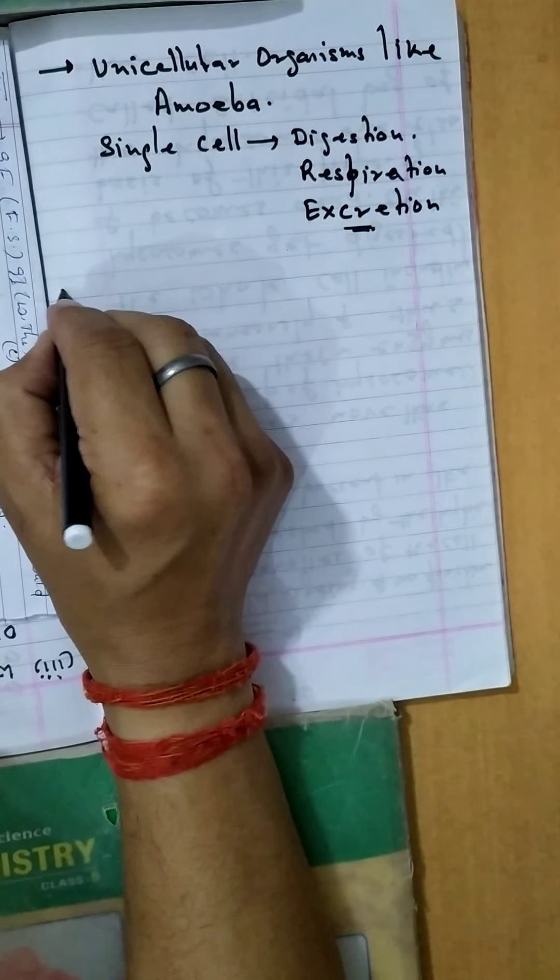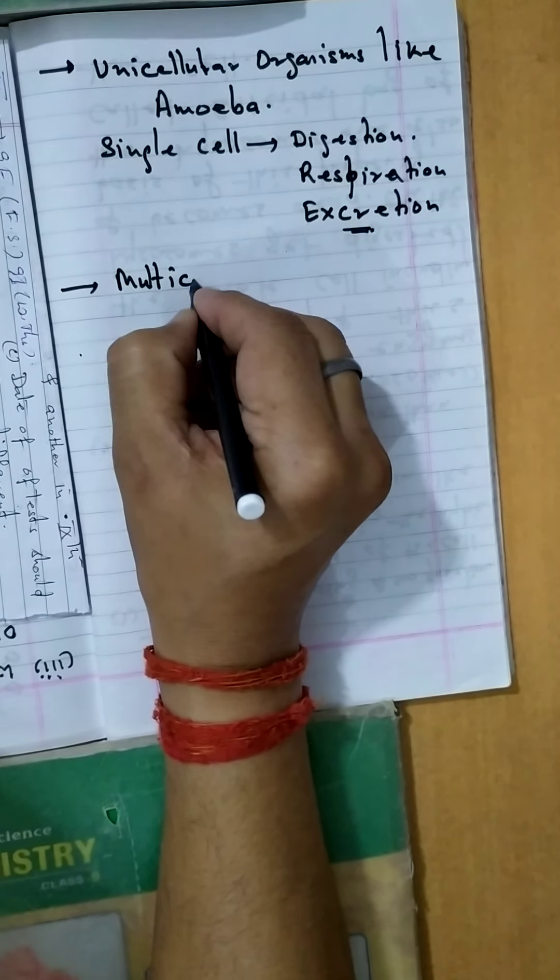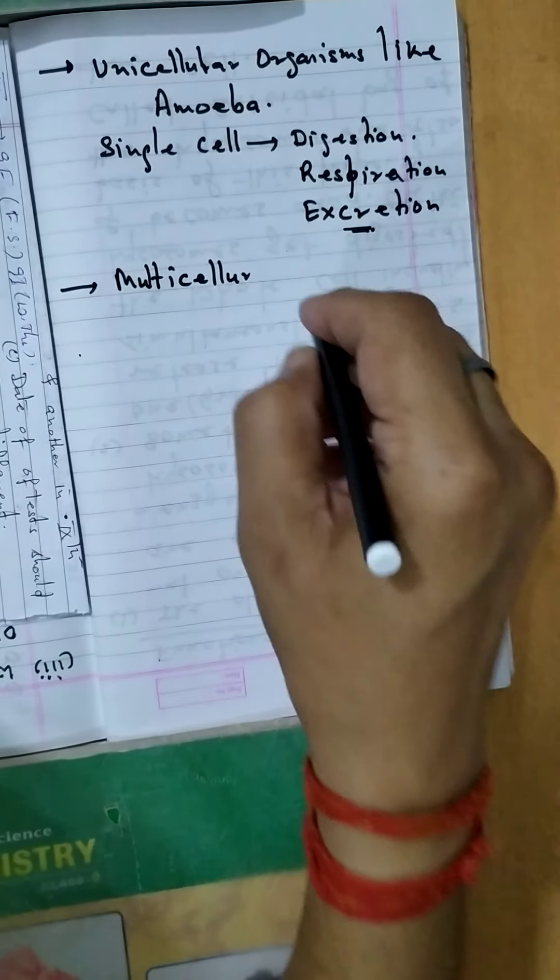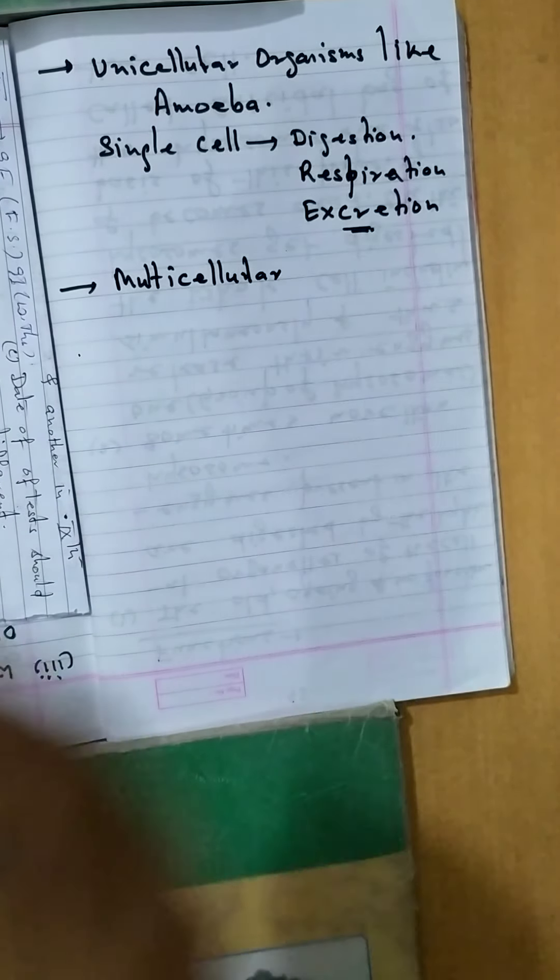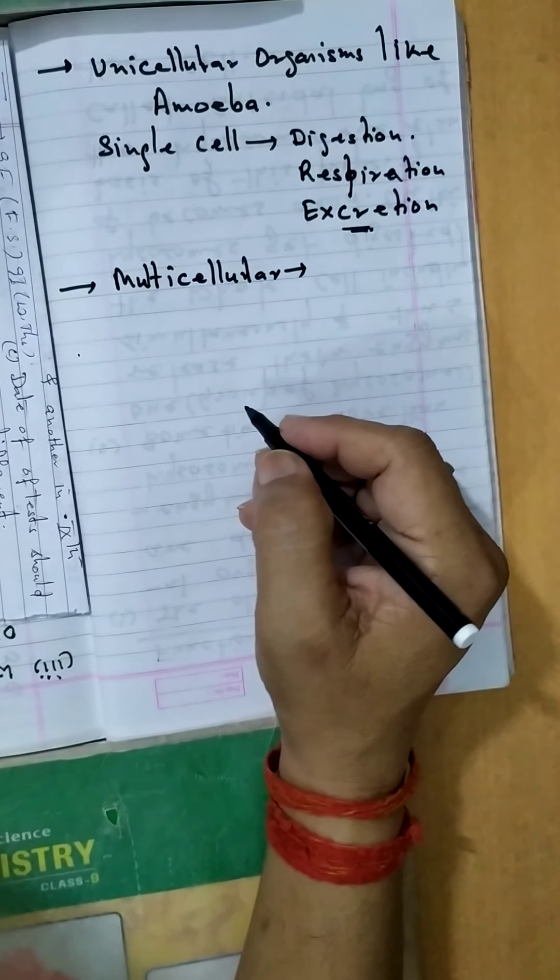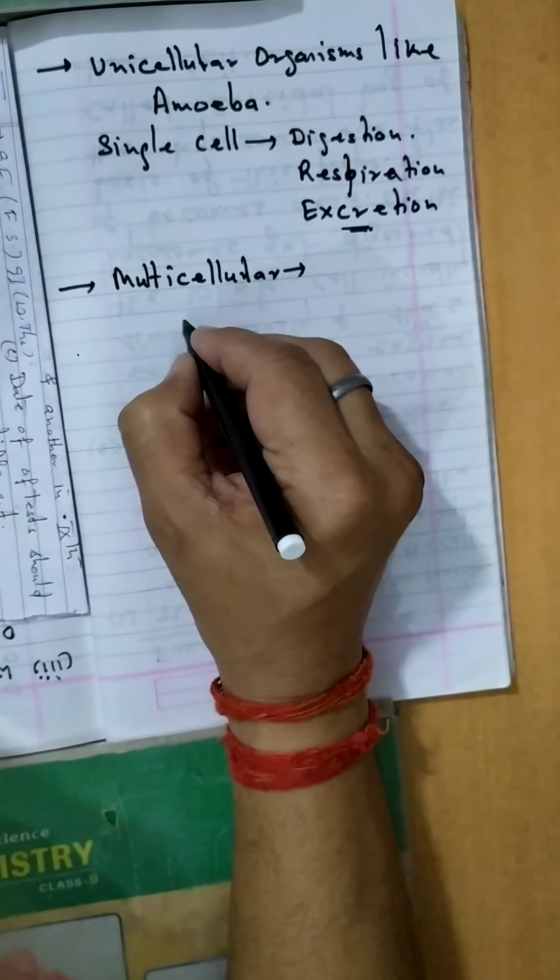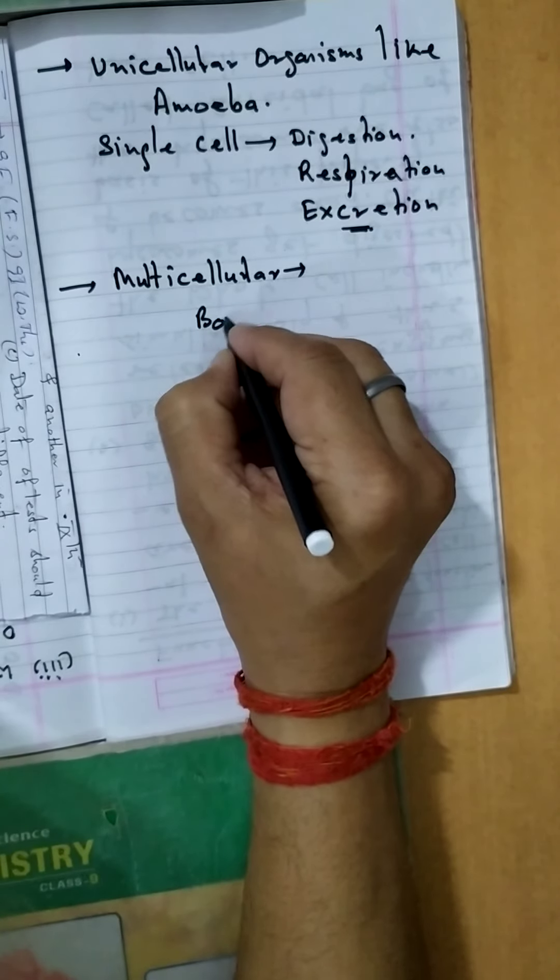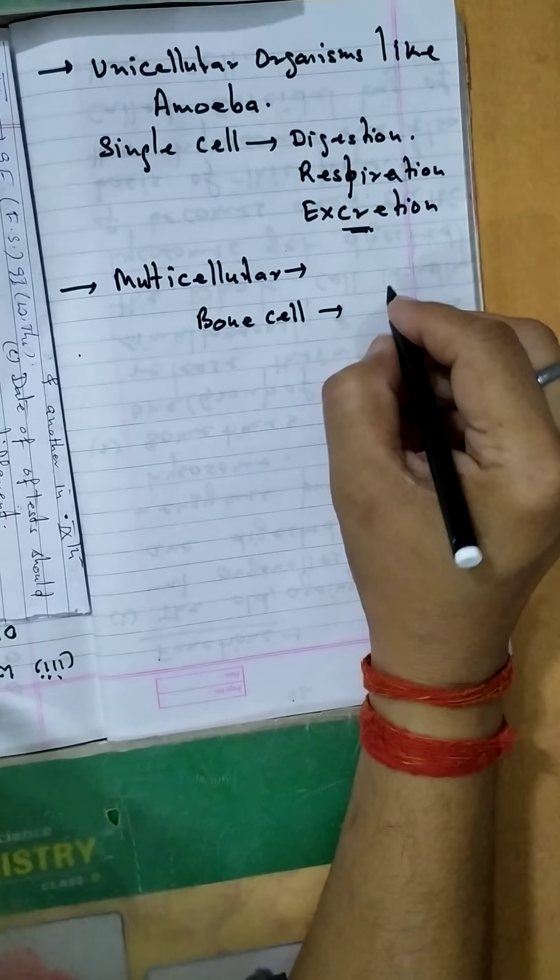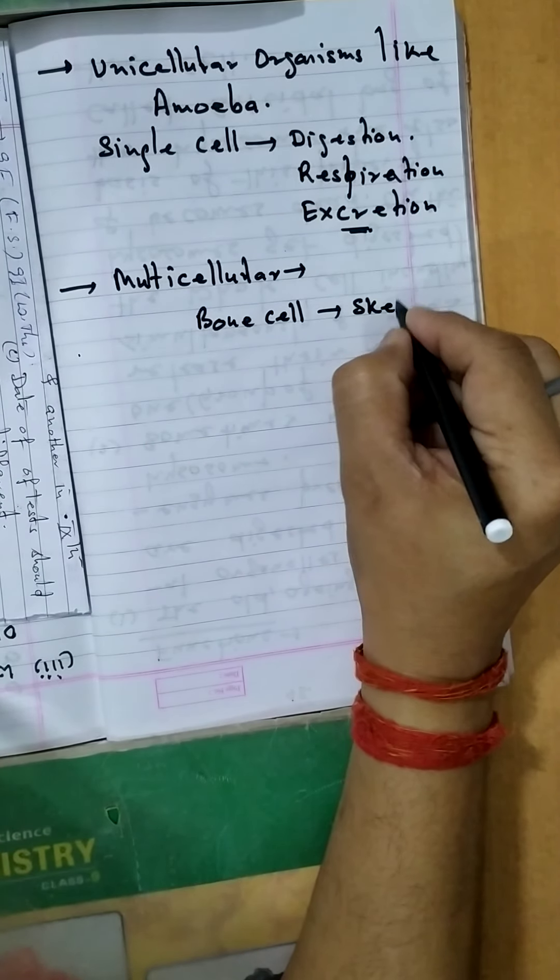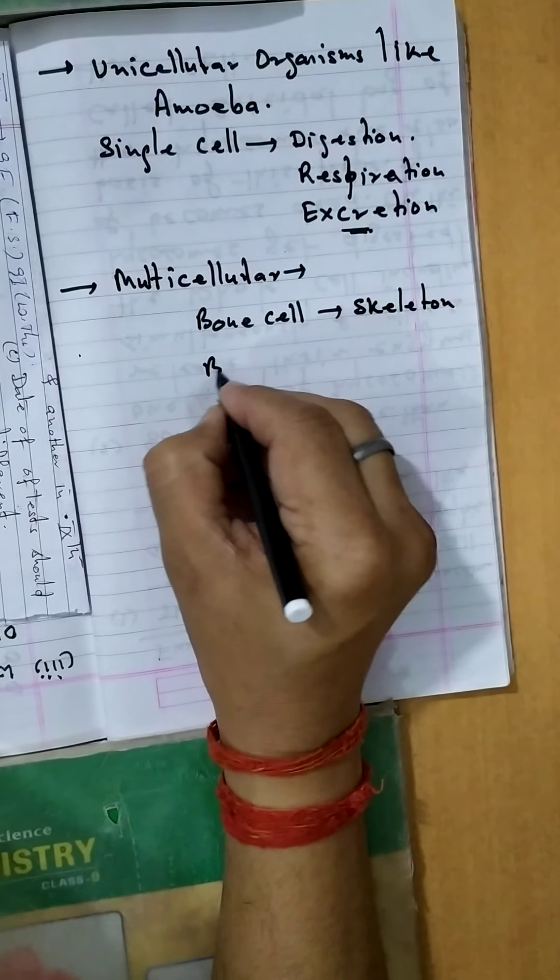But when the organism develops and becomes multicellular, the various activities are performed by various organs. Like bone cells form skeleton.